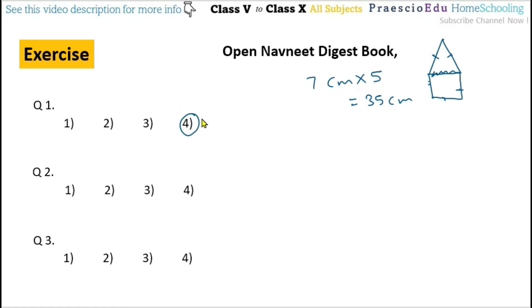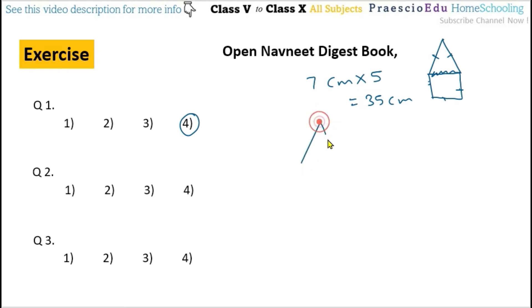Question number 2: the perimeter of the given triangle is 35 cm. What is the length of each of the equal sides? There is a triangle where 5 cm is already given and the two other sides are equal.